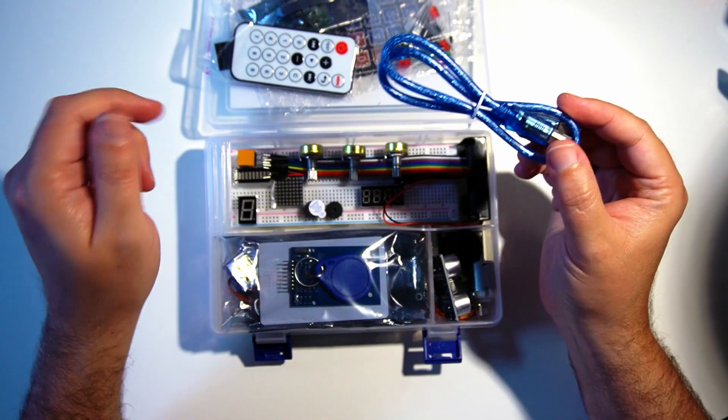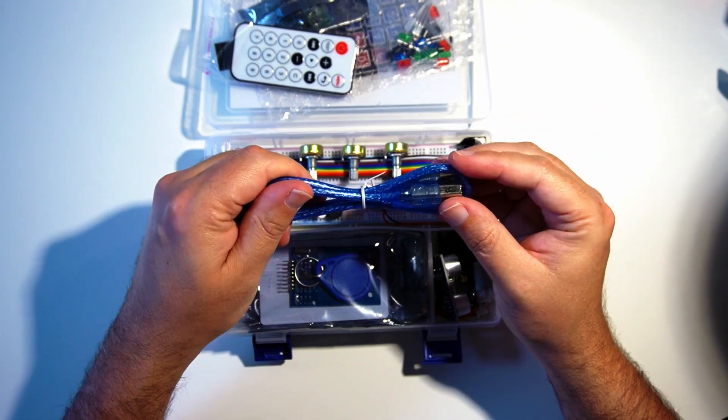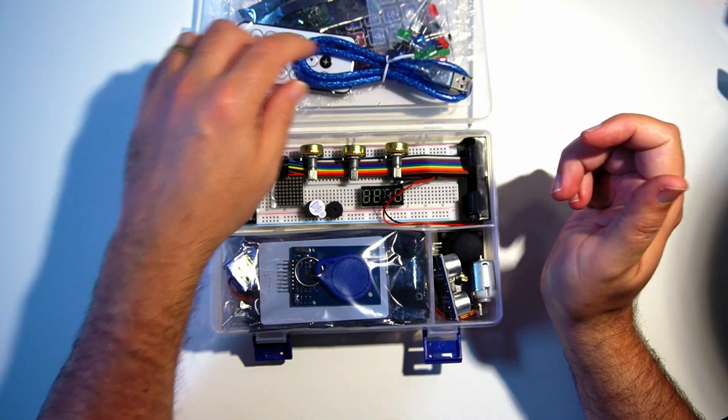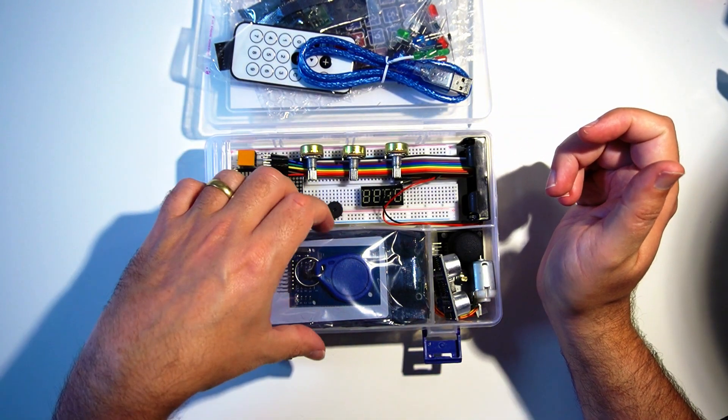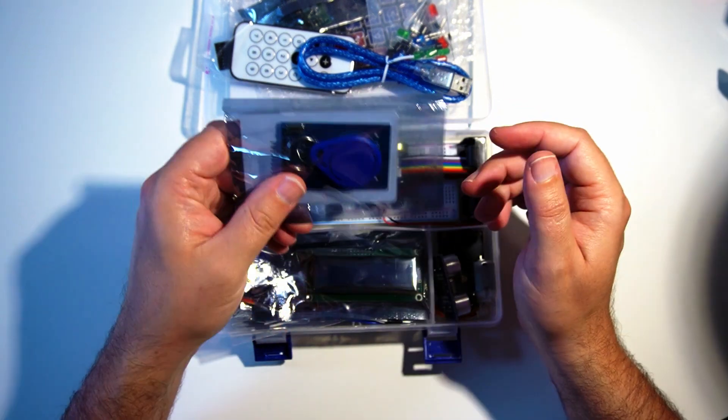What else have we got in here? A USB lead. That'll be to connect to the microboard, which comes with this. It's an Arduino R3, I believe. So this is probably one of the biggest features of this kit.